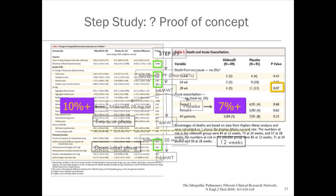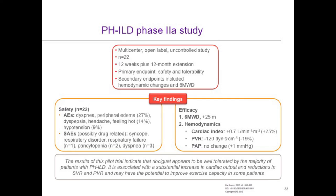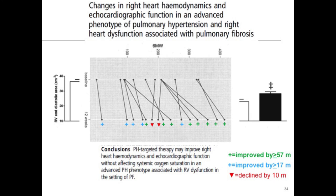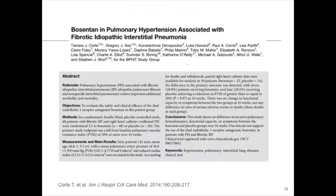A study of riociguat done by Maurice Hooper in Europe also suggested benefit — hemodynamic improvement and six-minute walk test improved by around 25 meters. This was a short-term study over around 12 weeks. There was also a study by the Saggar brothers at UCLA looking at parenteral treprostinil in patients with severe PH — mean PA pressure greater than 35 mmHg — which also appeared to be a positive study. Echo parameters improved, six-minute walk improved, with very few patients having any kind of decline. The point being that if you choose your patients correctly, maybe we can get a positive study.